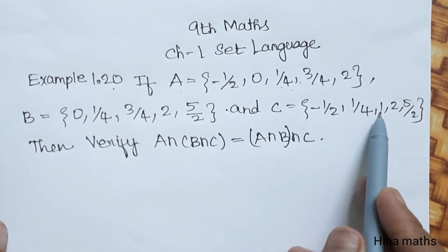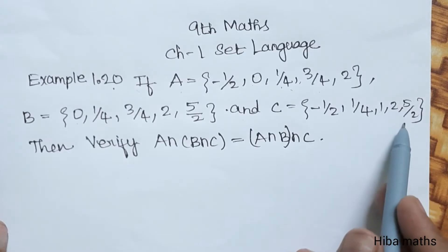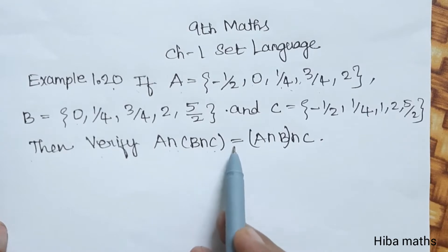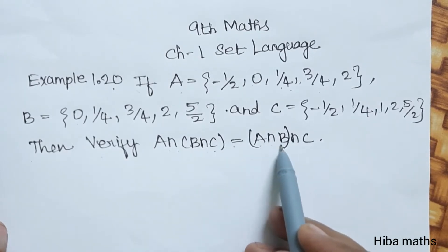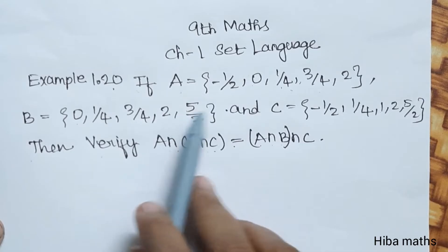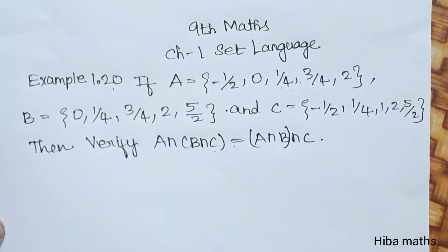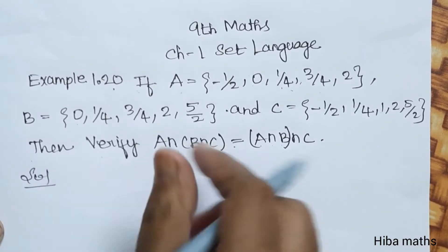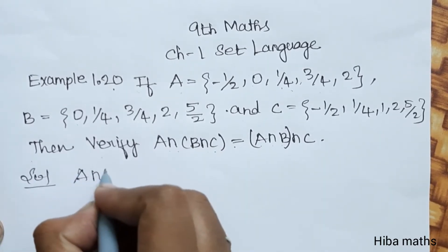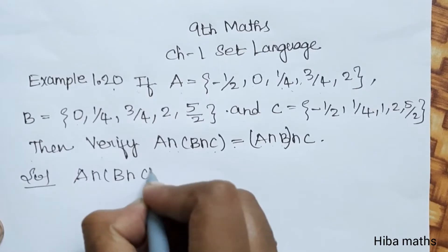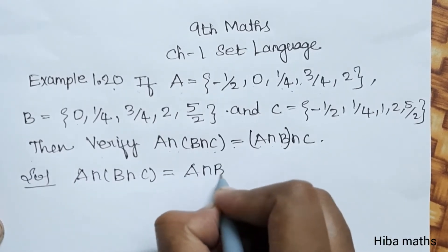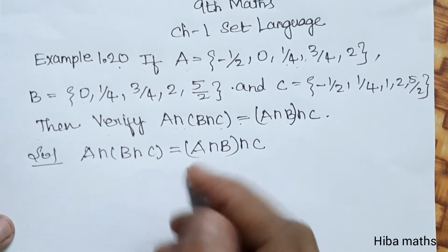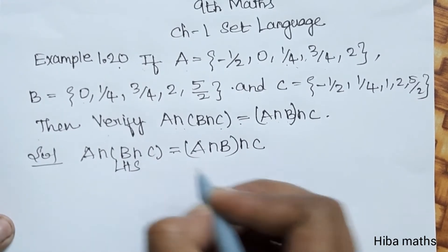Then verify A intersection (B intersection C) is equal to (A intersection B) intersection C. Let's say the left-hand side equals the right-hand side.